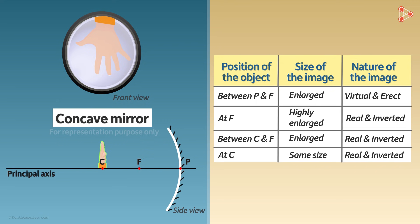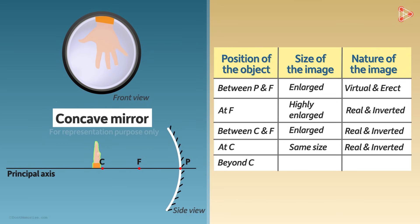What next? If I move this object beyond point C, the image remains real and inverted. But now the size of the image is actually smaller compared to the size of the object. So we say that the image is diminished. This is also a real image. As the object keeps moving beyond C, the size of the image keeps on reducing.